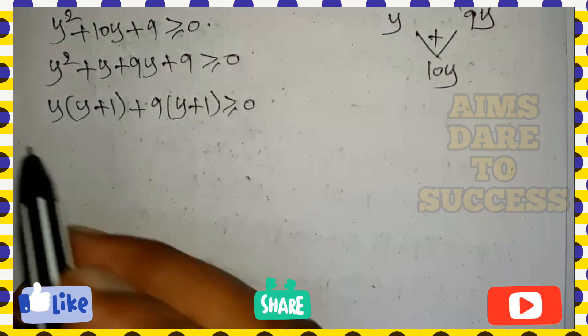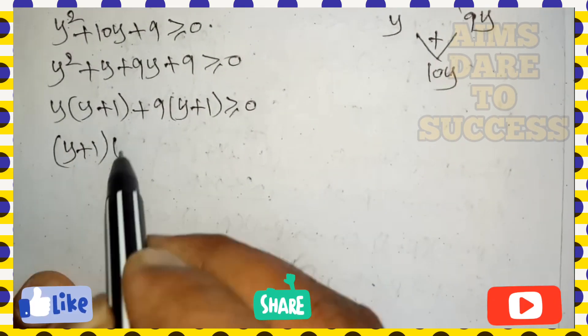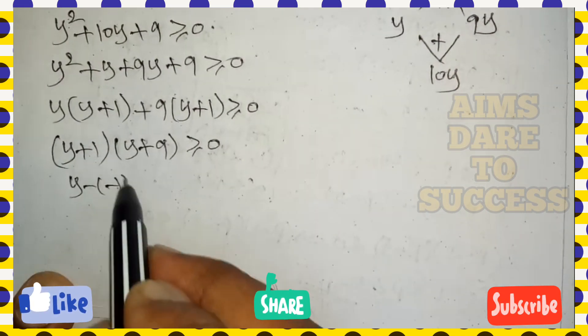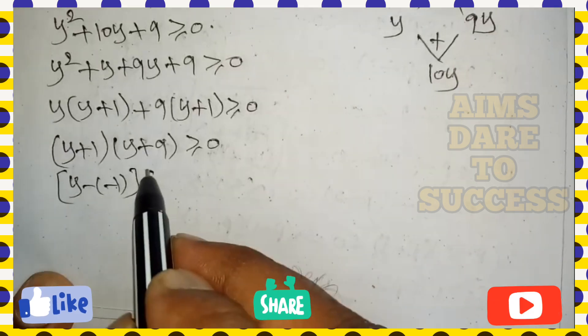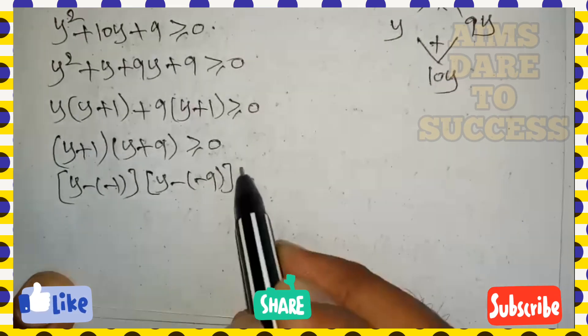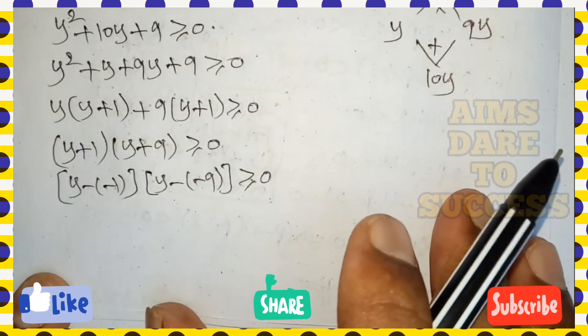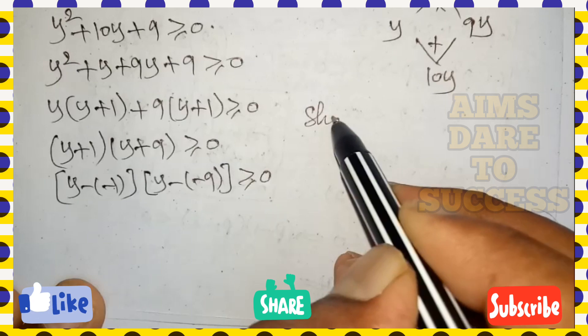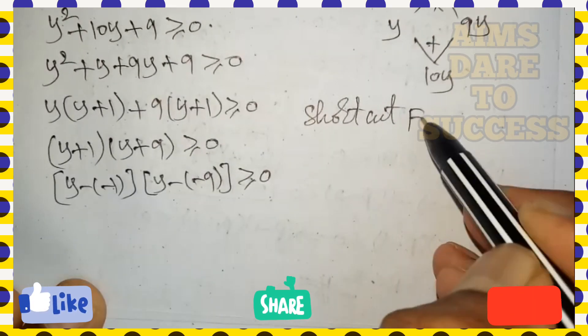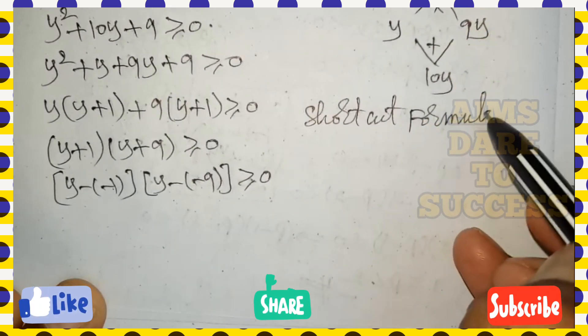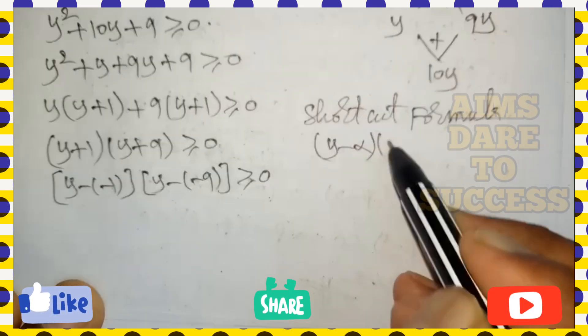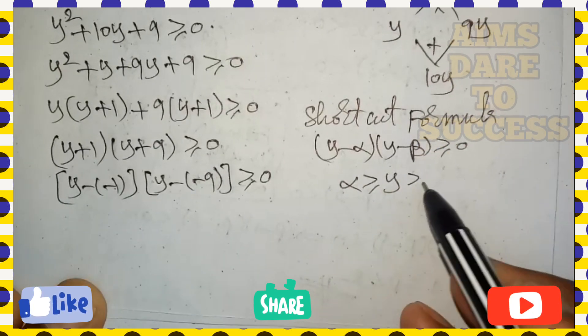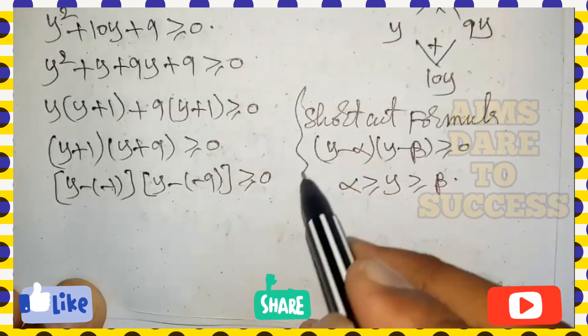First bracket and the next bracket: y plus 1 is common and remaining value y plus 9 is greater than or equal to 0. So this can be written as y minus of minus 1 into y minus of minus 9 is greater than or equal to 0. This looks like y minus alpha into y minus beta greater than or equal to 0. Our shortcut formula: y minus alpha into y minus beta greater than or equal to 0 means alpha greater than or equal to y greater than or equal to beta. Here alpha is a small value, beta is a big value.